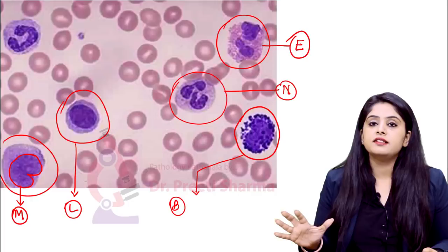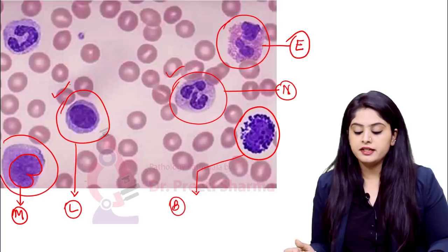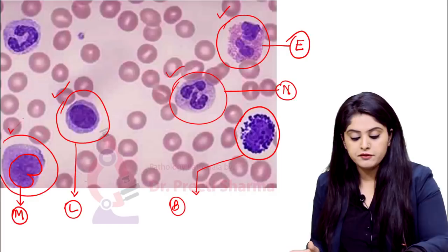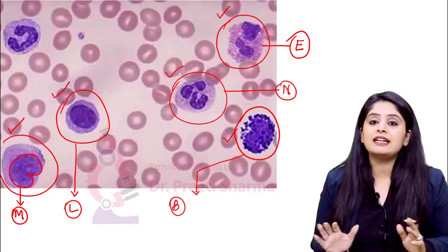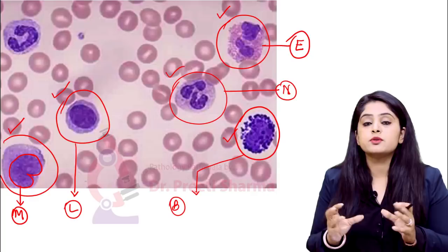These are the five cells around which this entire chapter will revolve. If you have nuclear lobes, consider a neutrophil. If you have a simple-looking cell, lymphocyte. If you have a special orange-pink colour, eosinophil. If you have a kidney-shaped nucleus, monocyte. And when you can't appreciate practically anything and the entire cell is covered by coarse granules, it becomes a basophil. This is the summary for image identification.